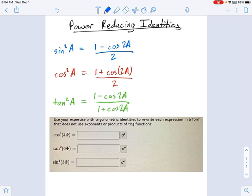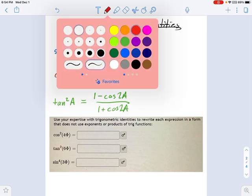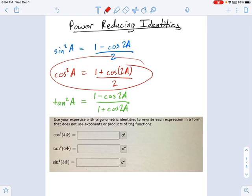So let's try the first one. Here, I'm going to try to be consistent. I'm using the cosine identity right here to rewrite cosine squared of 4 phi.